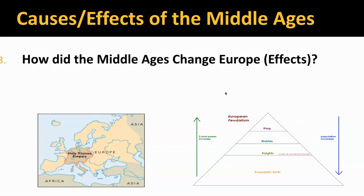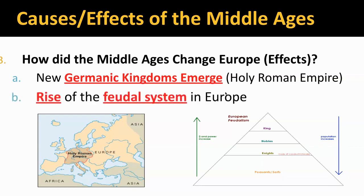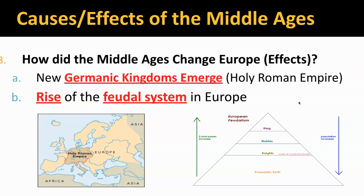How did the Middle Ages change Europe? Those Germanic invasions disrupted Europe and led to significant changes. Without Rome, new Germanic kingdoms emerged. We're going to talk about the Holy Roman Empire that comes from the Frankish kingdom — who the Franks are and how that leads to the Holy Roman Empire. We're also going to talk about the feudal system. In the bottom right corner you can see the feudal pyramid that we're going to act out in class. It's very similar to the feudal system we talked about in Japan, but it has its differences too. It's the rise of the feudal system in Europe.